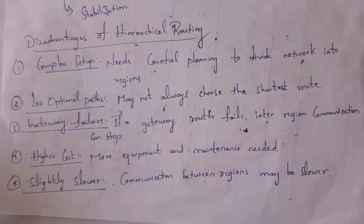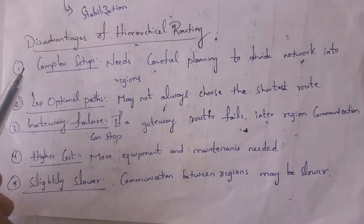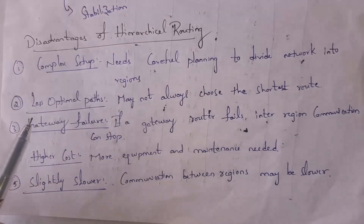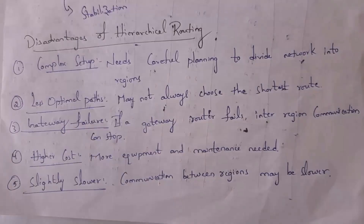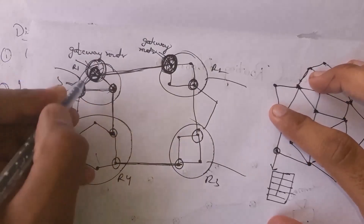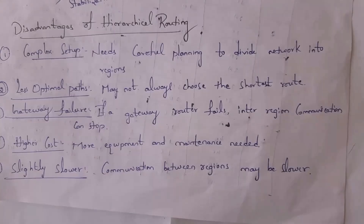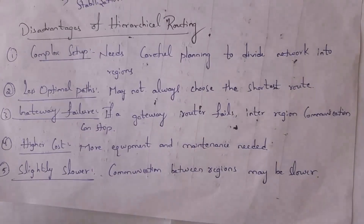These are the disadvantages of hierarchical routing. First, complex setup — dividing the network into regions is hard to set up and needs careful planning. Second, less optimal paths — hierarchical routing does not always choose the shortest path and may sometimes choose a longer path based on network conditions. Third, gateway failure — if a gateway router fails, regions cannot communicate. Fourth, higher cost — it requires more equipment and maintenance. Fifth, slightly slower communication between routers in different regions.